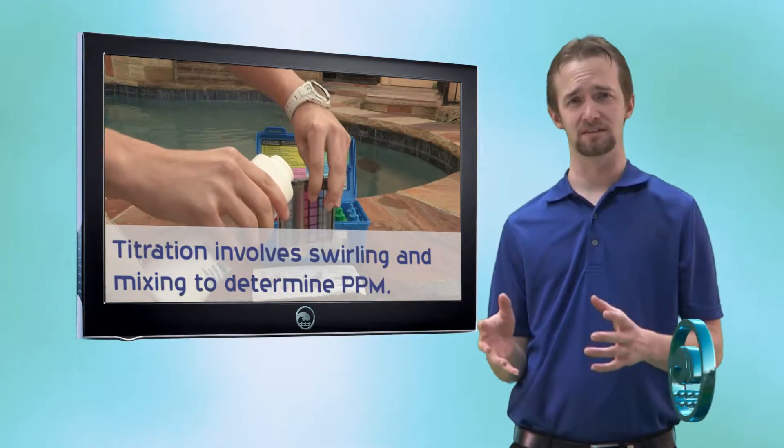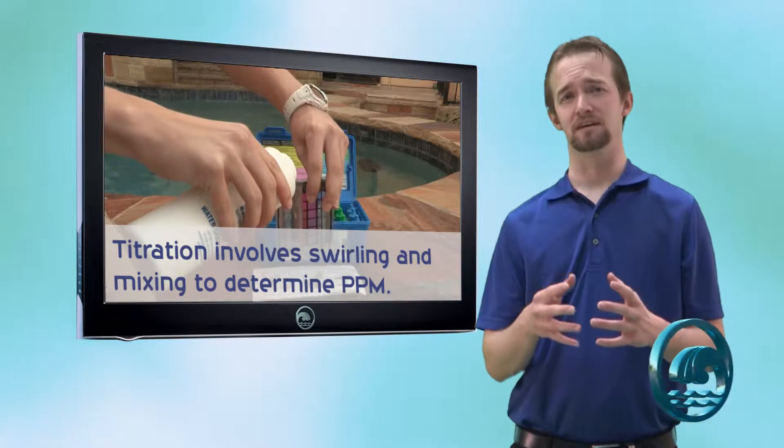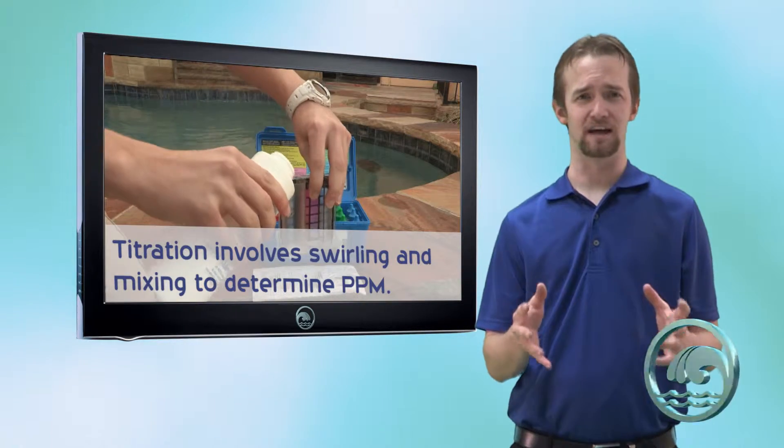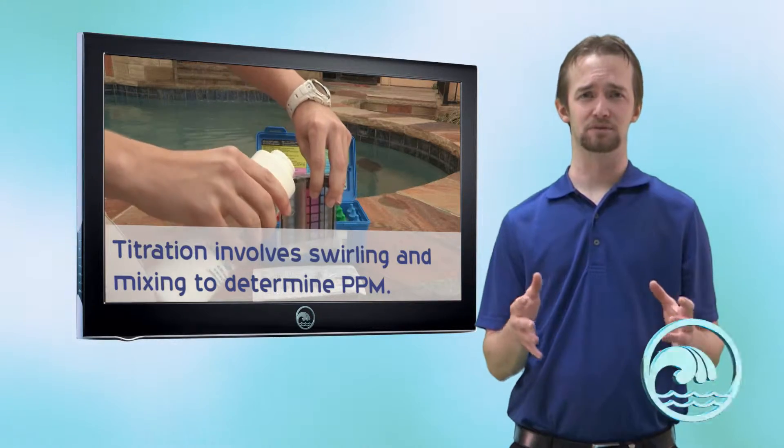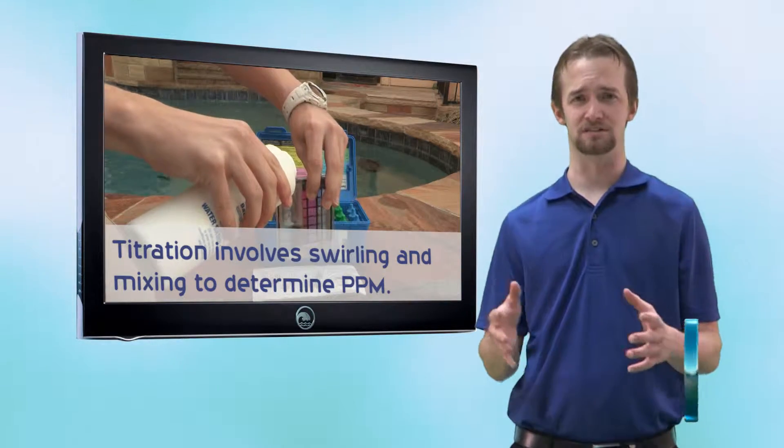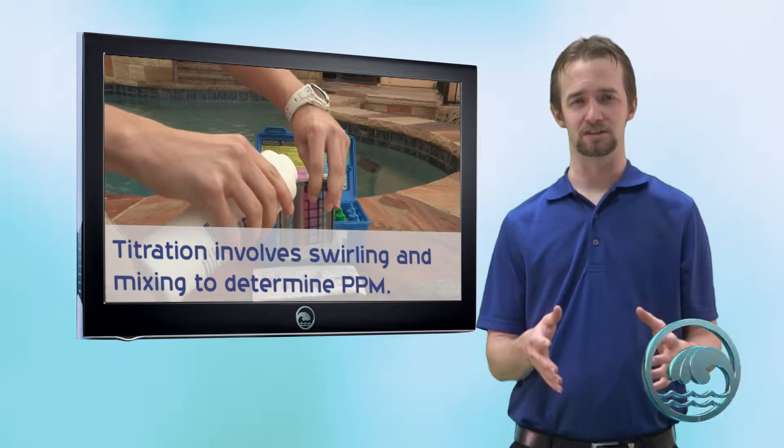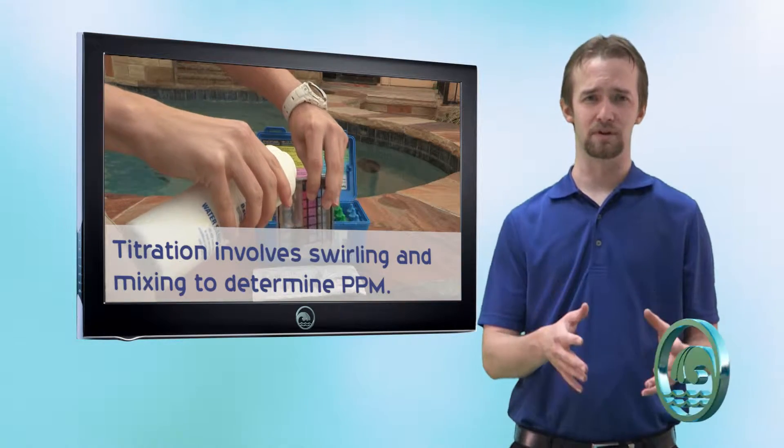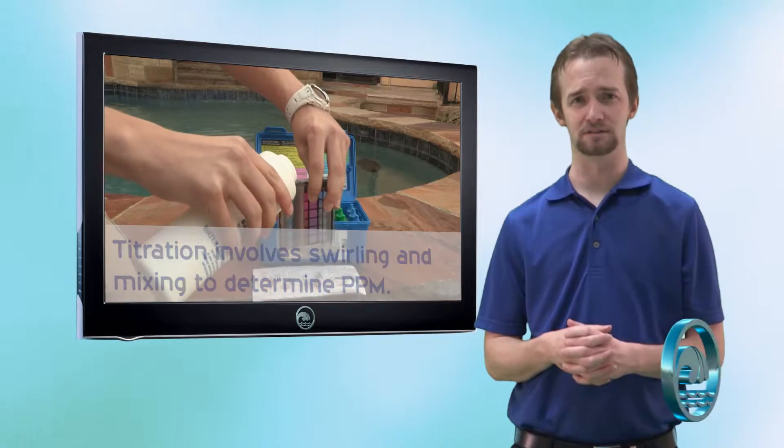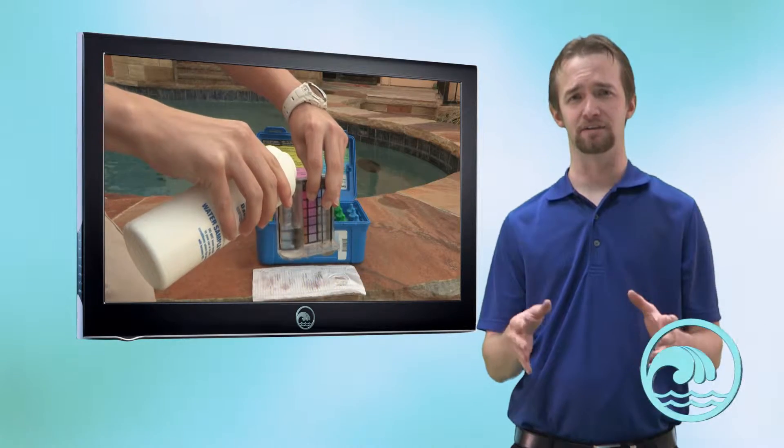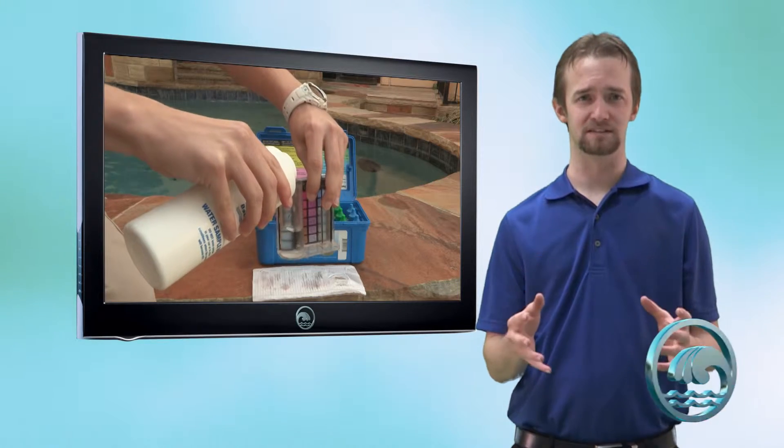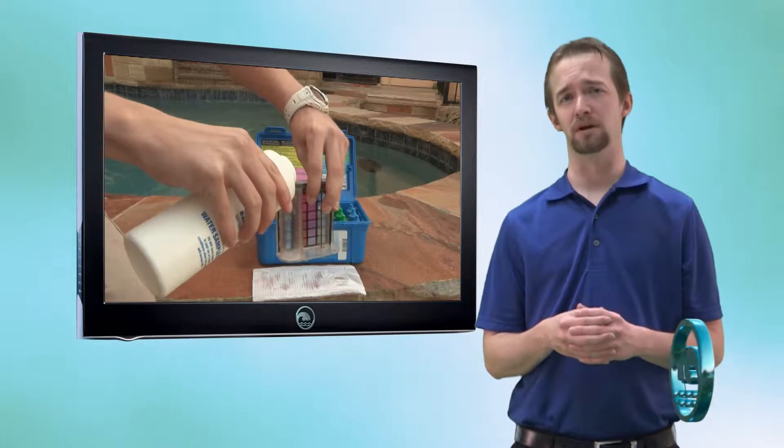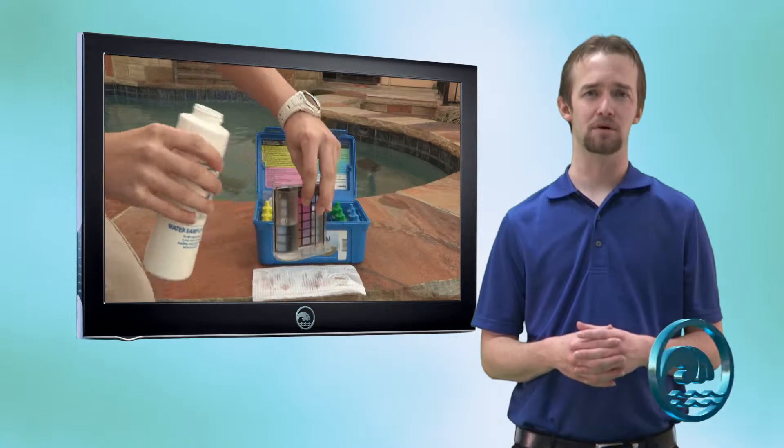The process for testing alkalinity is called titration and it's a little bit different than just adding in a few drops and comparing a color. We're going to have to add some drops and wait until one color of our water changes to another. Titration is how we figure out both total alkalinity and calcium hardness. So pay close attention to how this works because it's a little bit tricky. Like I said, the first thing we need to do, fill the large compartment up to the 25 milliliter mark.